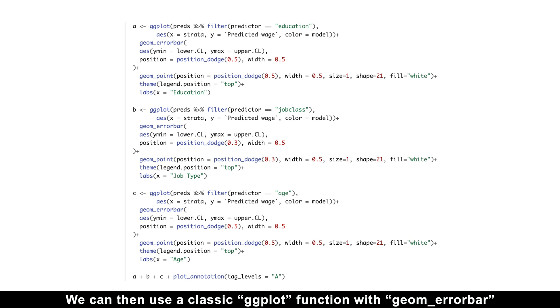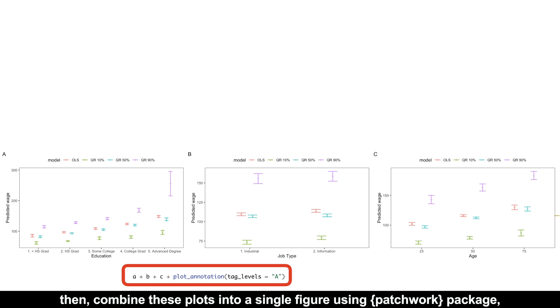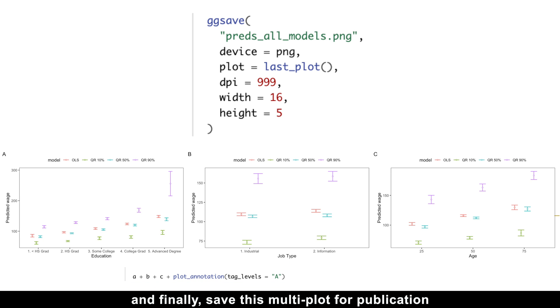We can then use a classic ggplot function with geom_errorbar and geom_point to first create individual plots containing all four models for each predictor, then combine these plots into a single figure using patchwork package, and finally save this multiplot for publication in a format, quality, and size of our choice. Cool, right?